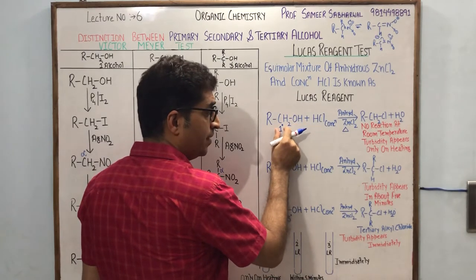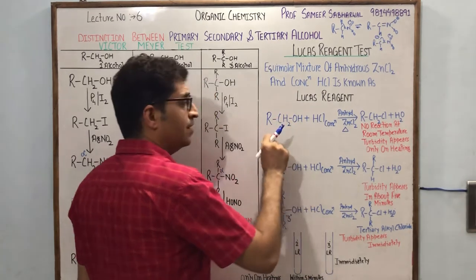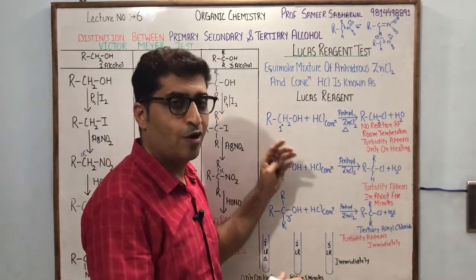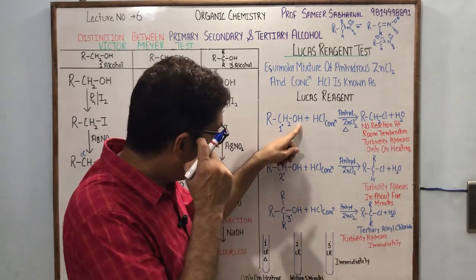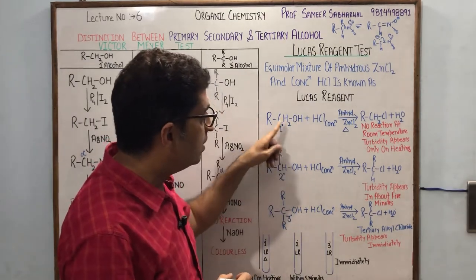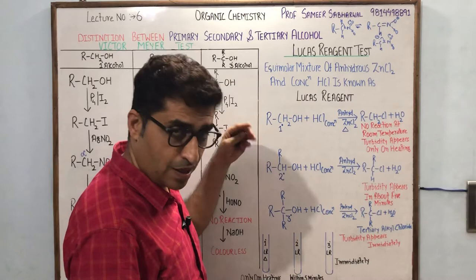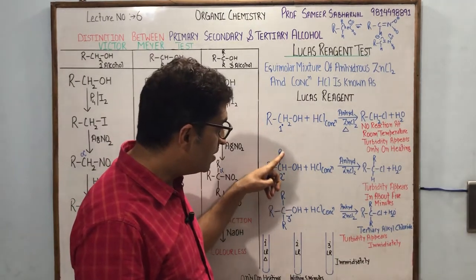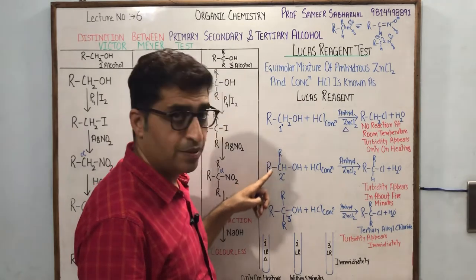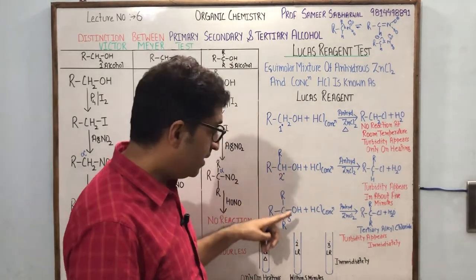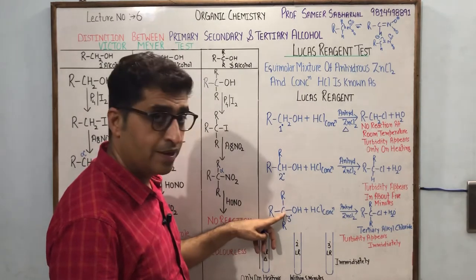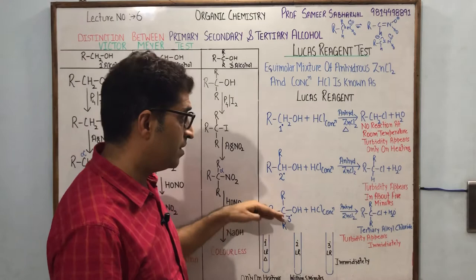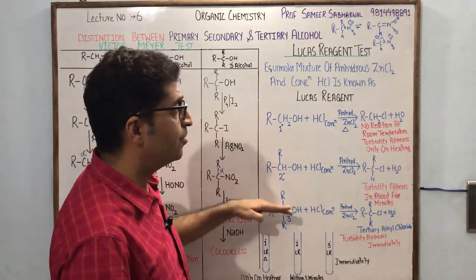We distinguish one degree, two degree, and three degree alcohols as follows: the OH group in primary alcohol is attached to a carbon which is in turn attached to one carbon or no carbon. If OH is attached to a carbon attached to two carbons, it is secondary. If OH is attached to a carbon attached to three carbons, it is tertiary.